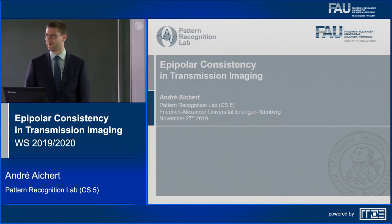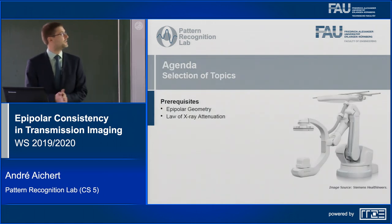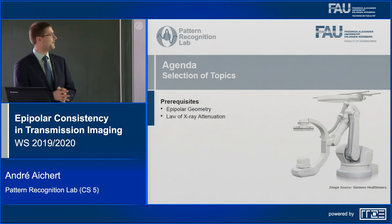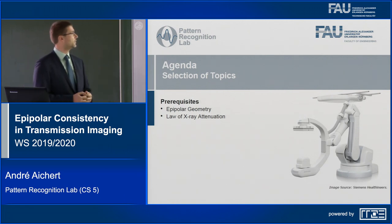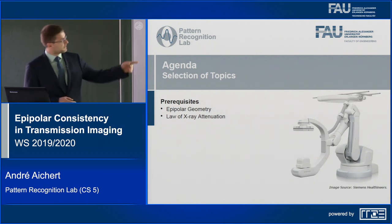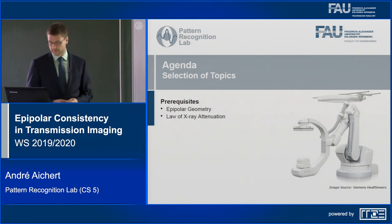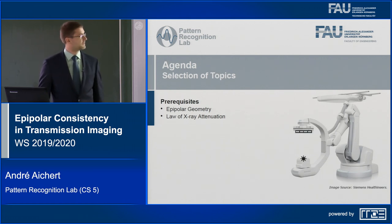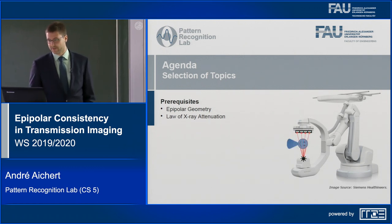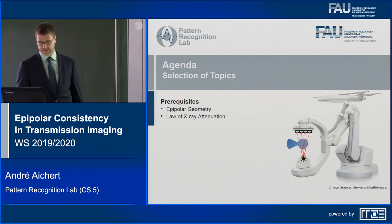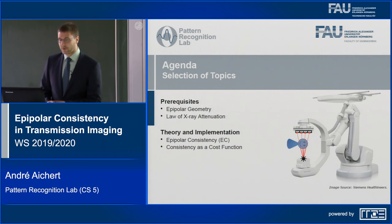Welcome everybody. I'm presenting a medical C-arm scanner — on the right, for those not familiar with these devices, there is an x-ray source on the bottom emitting x-rays and a detector on the top. Typically the patient would be placed between those, with x-rays emitted at the source and detected at the detector.